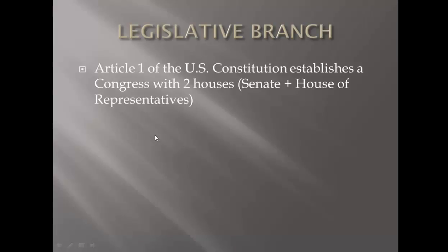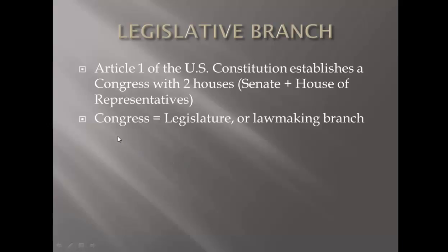If you read through Article 1 of the United States Constitution, it establishes a Congress that has two houses. The fancy word for that is bicameral — bi meaning two, two houses, bicameral. What are the two houses? We have the Senate and the House of Representatives. The Senate is seen as the upper house; the House of Reps is seen as the lower house. Our Congress, or legislature, is the lawmaking branch.